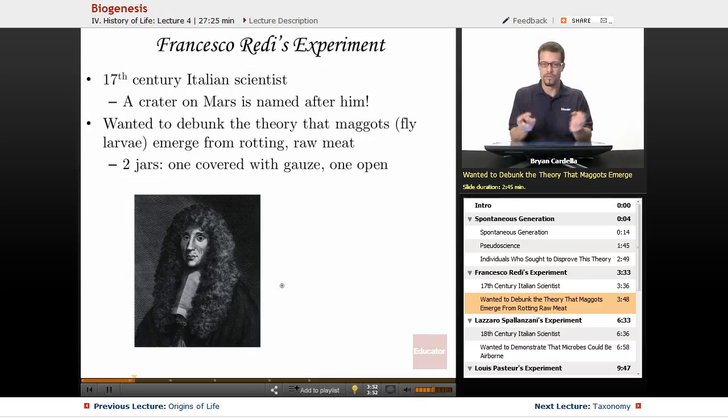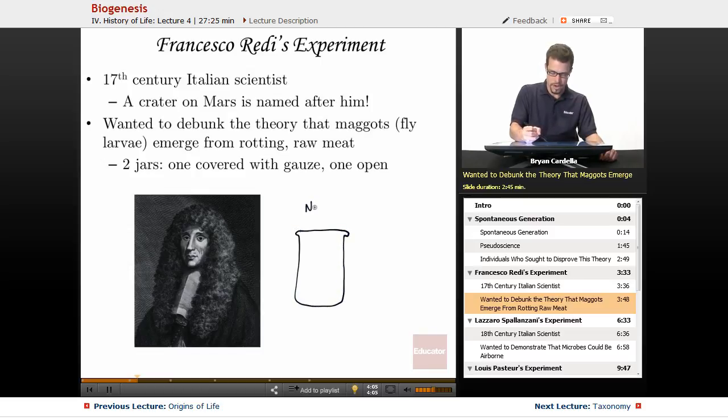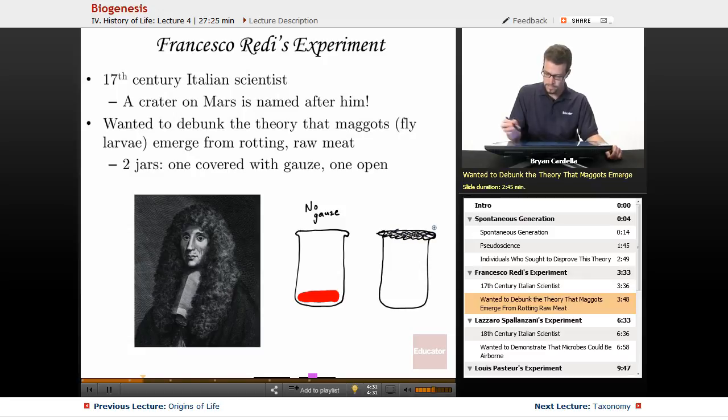He wanted to debunk the theory that maggots, fly larvae, emerge from rotting, spoiling, raw meat. So here's what he did. He used kind of a basic scientific method here. Two jars, one covered with gauze and one not. This one has gauze, same kind of meat. And he left them out.